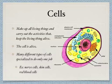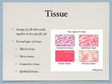What would happen if we put together a lot of cells that all work together for one purpose? What would we form? We'd form a tissue. Tissues are just groups of cells that work together to do a specific job. There are four main types of tissues: muscle tissue, nerve tissue, connective tissue, and epithelial tissue.